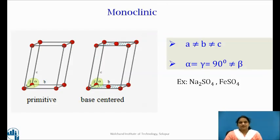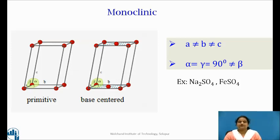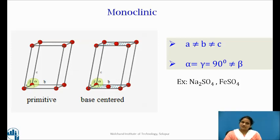In the monoclinic system, two of the three crystal axes are not perpendicular to each other, but the third is perpendicular to both of them. The edge lengths along the three axes are all different. The lattice parameters are A ≠ B ≠ C, with alpha = gamma = 90° ≠ beta. Monoclinic lattice has two possible arrangements: simple monoclinic, with lattice points at all eight corners, and base-centered monoclinic, with lattice points at all eight corners and two lattice points, one each at the base and top of the unit cell.